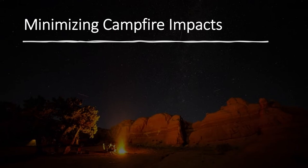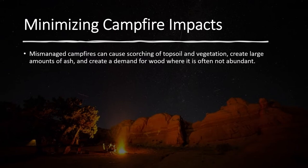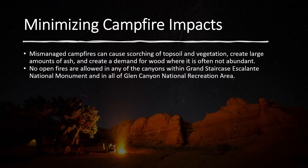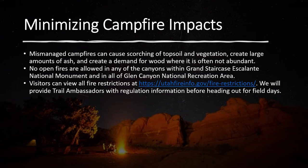Trail ambassadors should also inform visitors on how they can minimize campfire impacts. While the warmth and aesthetic from a fire can be nice when staying in Grand Staircase-Escalante National Monument, campfires can be fairly damaging to the landscape. Mismanaged fires can cause scorching of topsoil and vegetation, create large amounts of ash, and create a demand for wood where it is often not abundant. There are also several places within the monument where campfires are not allowed — no open fires are allowed in any of the canyons within Grand Staircase-Escalante National Monument and all Glen Canyon National Recreation Area. Visitors should always check for any seasonal fire regulations or bans at utahfireinfo.gov/firerestrictions before their trip.